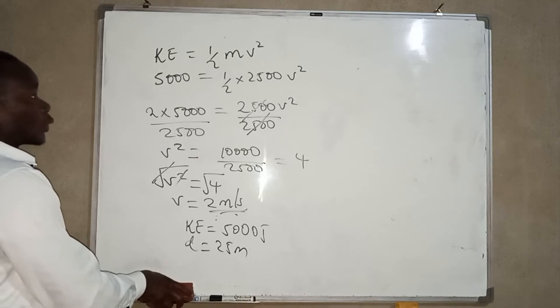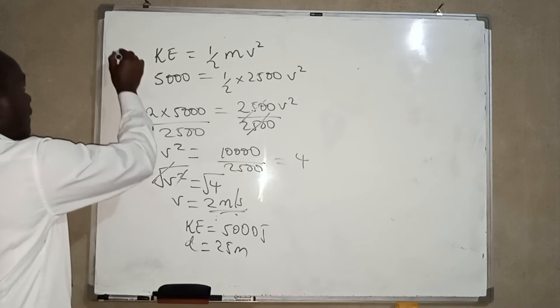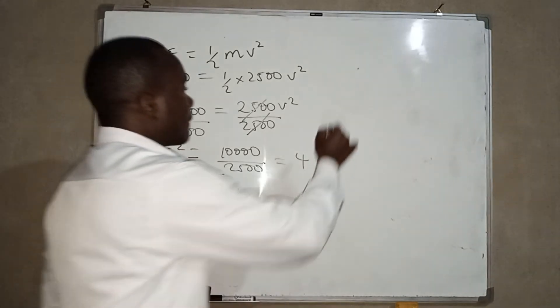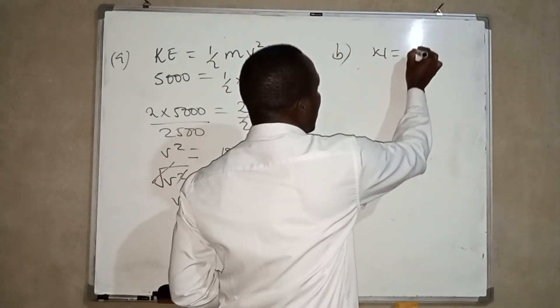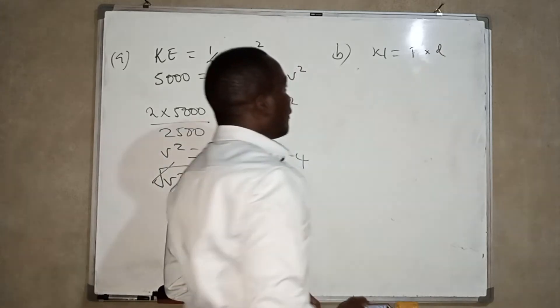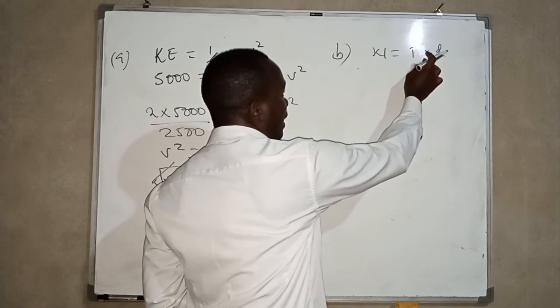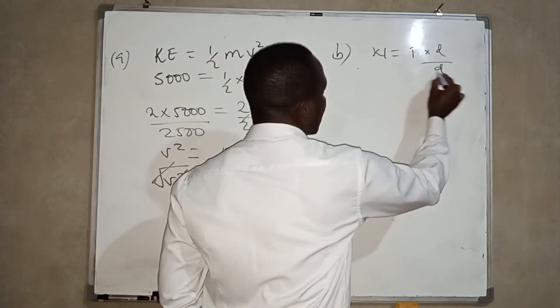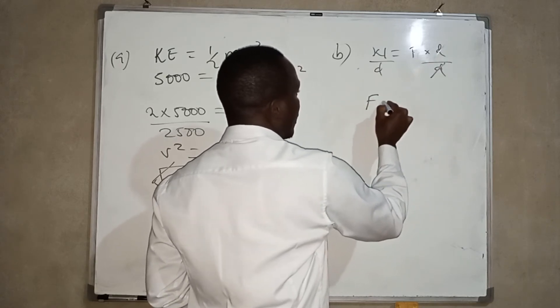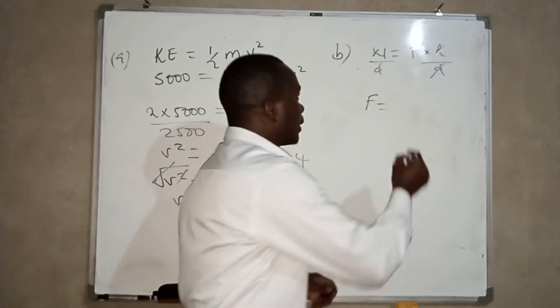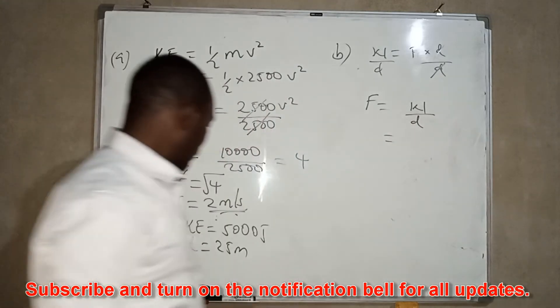Now, we are also going to find the horizontal force. So this is A. Now, B, for the horizontal force, we know that work is equal to force times distance. Since we want the force, we can make F the subject, so by dividing by D, we are going to have F is equal to work over distance.